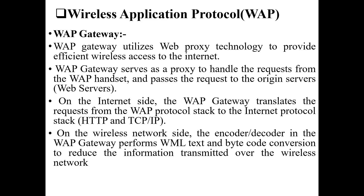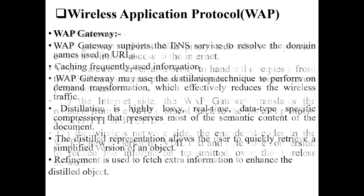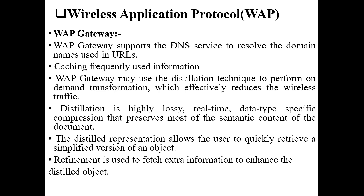On the wireless network side, the gateway works as an encoder/decoder, converting WML text into bytecode to reduce the information transmitted over the wireless network. It also supports DNS (Domain Name System) service to resolve URL identification. A distillation technique is used to perform on-demand transformation to effectively reduce wireless traffic, allowing users to quickly retrieve a simplified version of an object transparently.